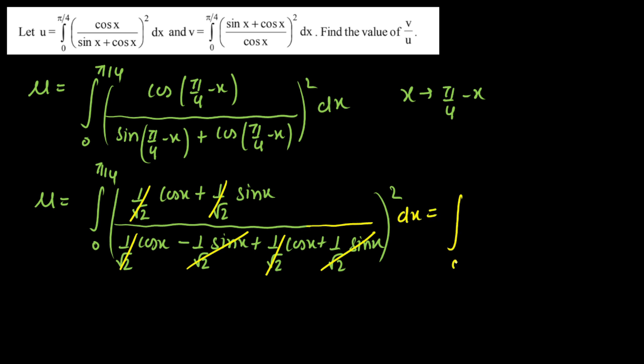So we'll get integration 0 to π/4. In the numerator we have cos x plus sin x, and the whole thing divided by cos x plus cos x, that is 2 cos x, and the whole square.